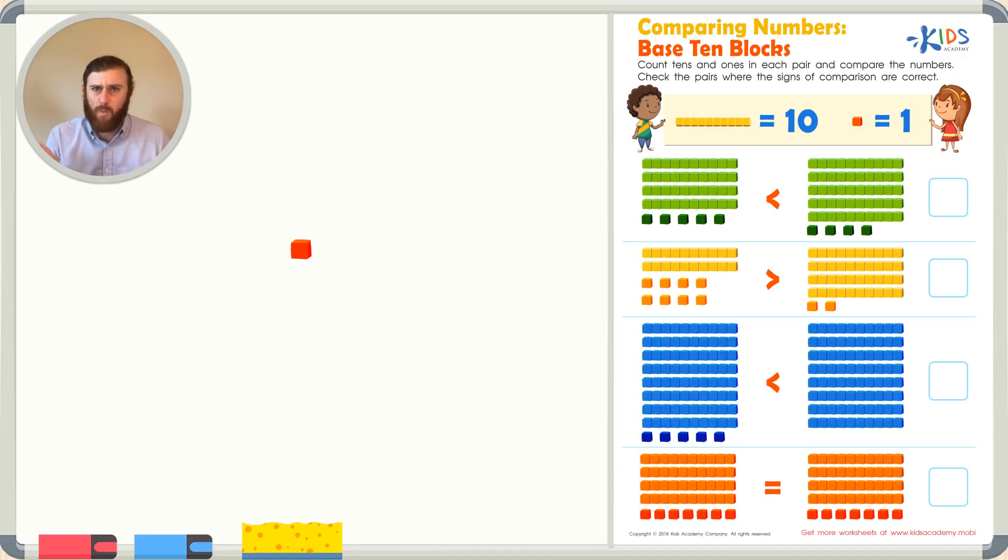Today we're going to be looking at a worksheet that asks us to compare numbers. Before we get started, let's remind ourselves of some really important things to know in place value. First, which base 10 block do you see? This is a cube. Do you know the value of the cube? A cube is worth just 1. How about a long? Do you know how much the long is worth? Well, the long is made up of 10 individual cubes. Therefore, the long is worth 10.